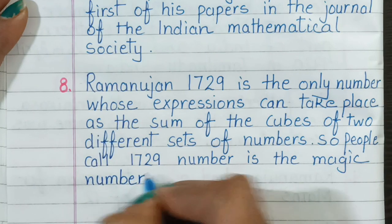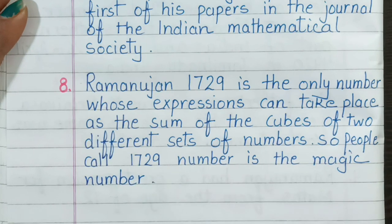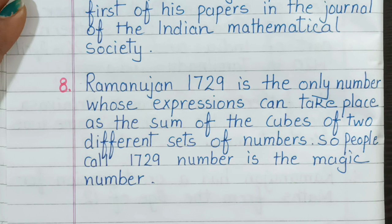Number 8. Ramanujan showed that 1729 is the only number whose expression can take place as a sum of the cubes of two different sets of numbers. So people call 1729 the magic number.